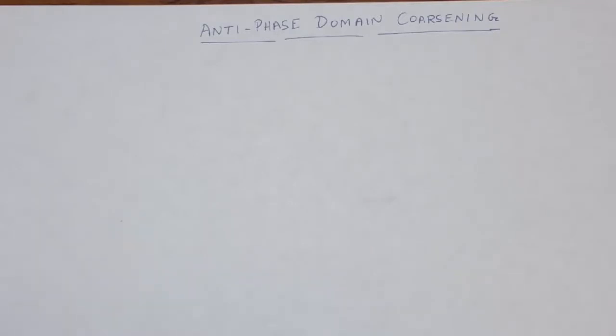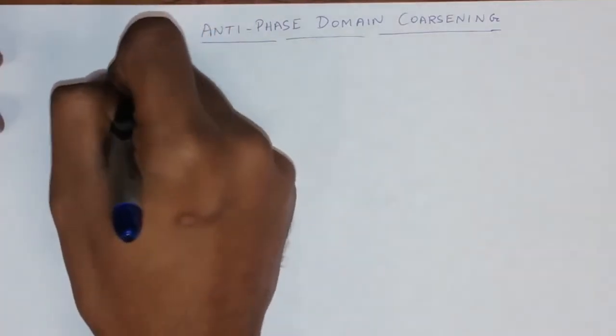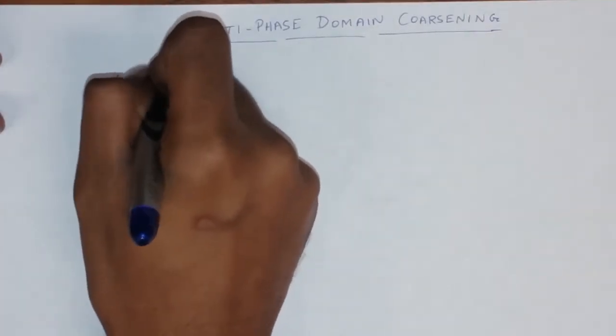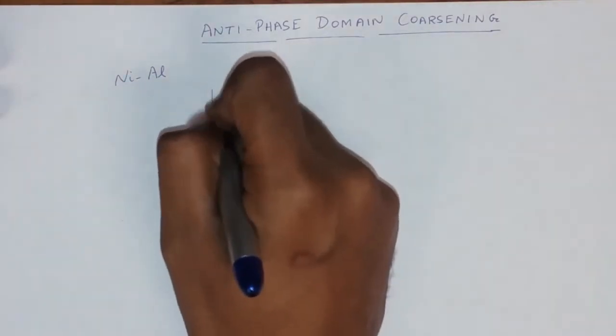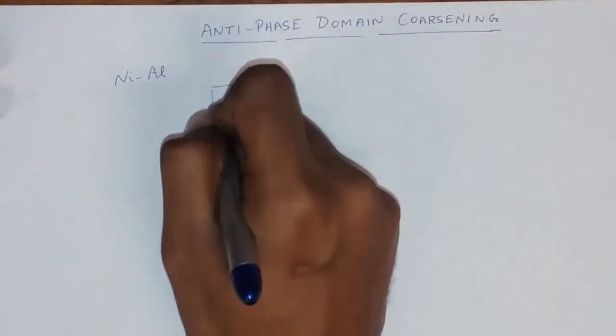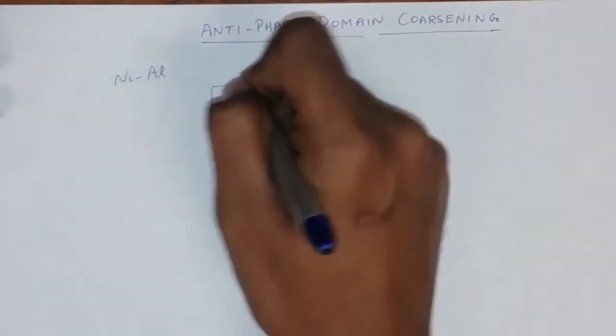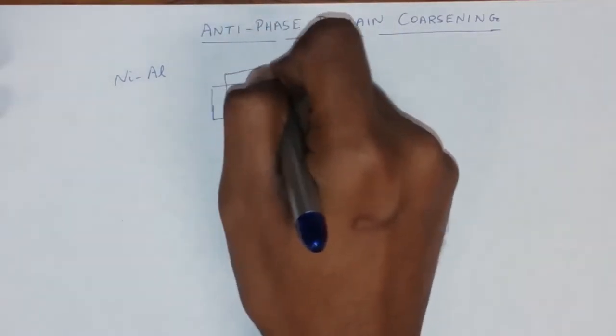What is an anti-phase domain? I'm going to take the example of a nickel-aluminium inter-metallic alloy to explain this. So a nickel-aluminium inter-metallic alloy has an ordered B2 structure which is essentially a BCC structure except that this BCC structure is interpenetrating.